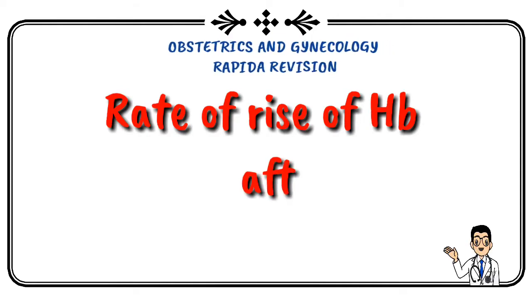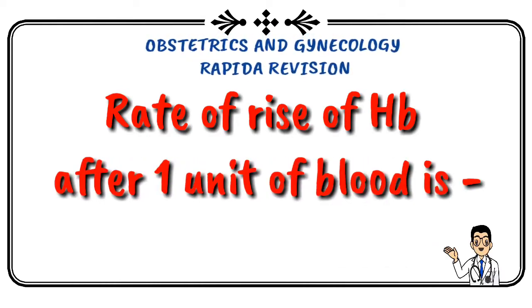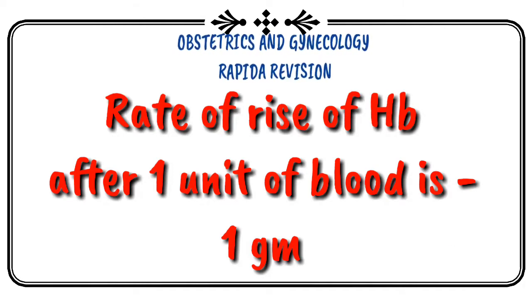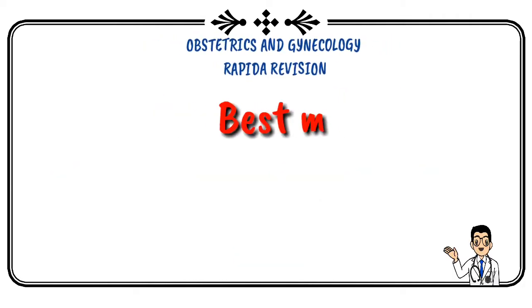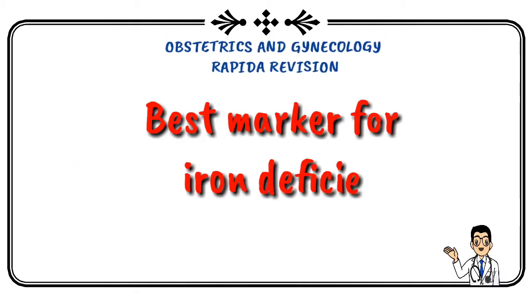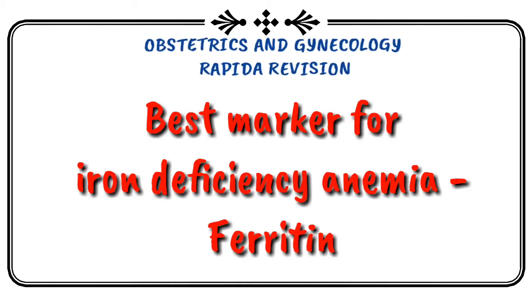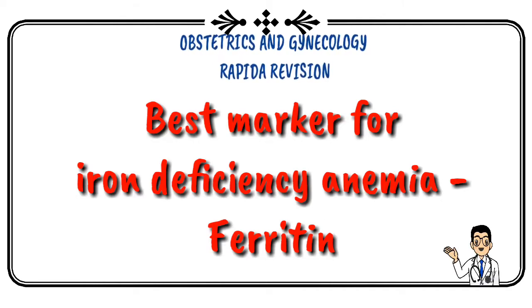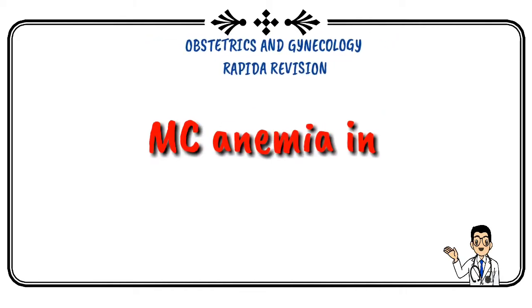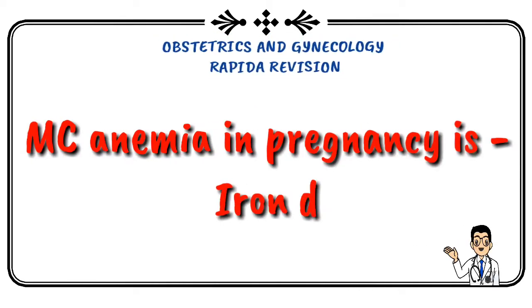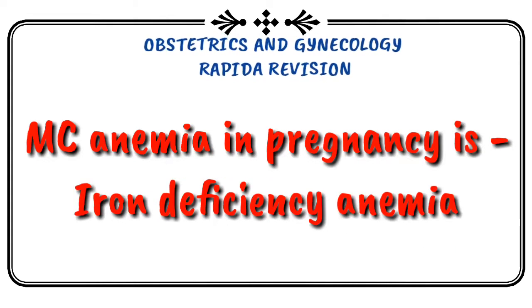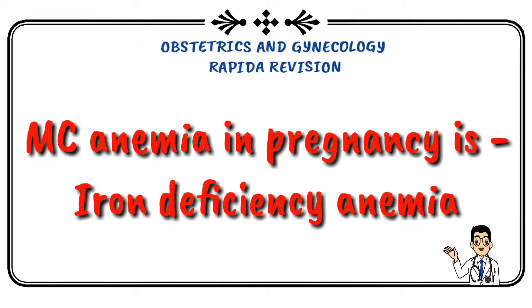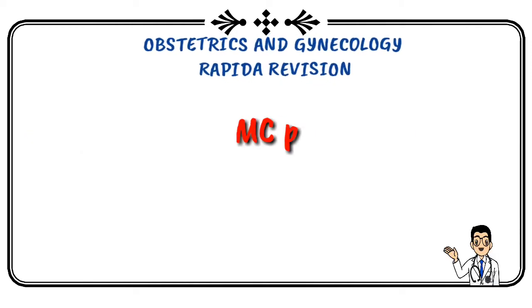Rise in hemoglobin after one unit of blood is equal to 1 gram. Best marker for iron deficiency anemia is ferritin. Most common anemia in pregnancy is iron deficiency anemia.